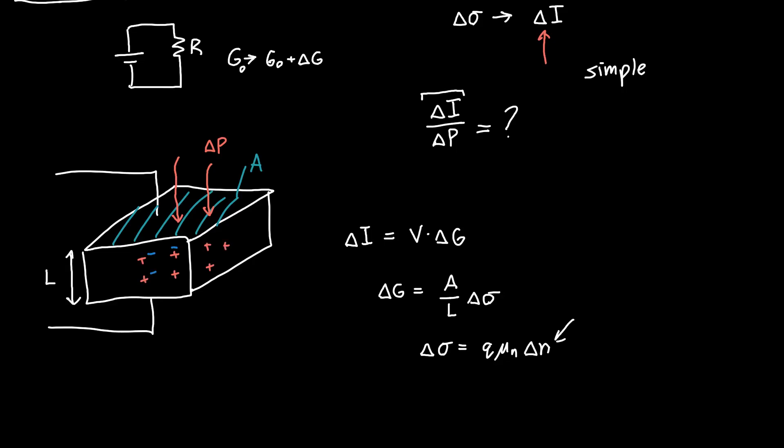A bunch of electron-hole pairs. Here we're only worrying about the electrons because we said that mu_n was much larger than mu_p. After a certain amount of time, these generated electron-hole pairs are going to recombine back into the semiconductor.